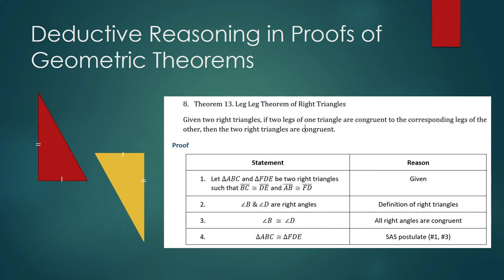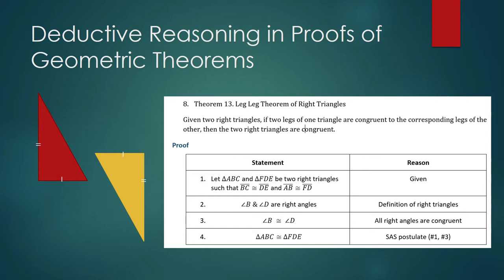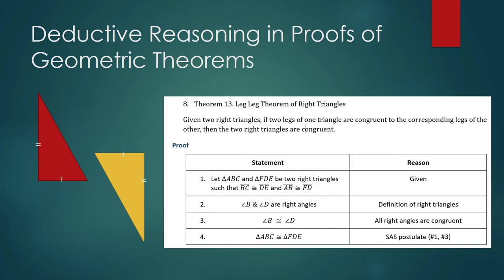Deductive reasoning is a reasoning wherein you are working on a set of assumptions which you assume to be true. Those assumptions — which you and your audience assume to be true — are listed in the second column: definition of right triangles, that all right angles are congruent, and the SAS postulate. You don't have to explain to your audience what these are because you assume they already know and agree these statements are true. So you had been doing deductive reasoning when constructing proofs in geometry.